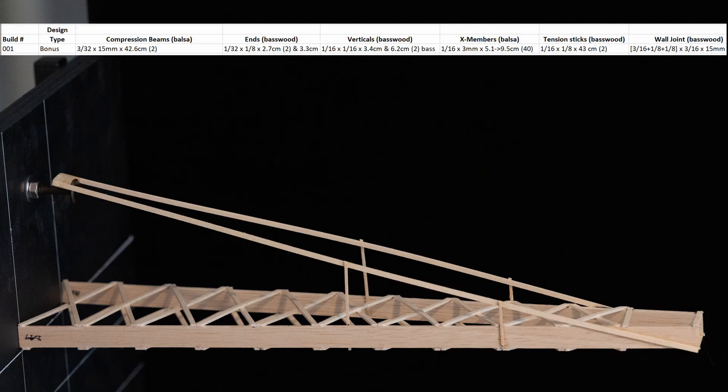Strongly borrowing from what I learned during the previous Boomi cycle, this is the design I started with. For the compression beams, I used three 32nd sheet balsa cut to 15 mm tall with a length of 42.6 cm. The end pieces were 1/32 by 1/8 basswood cut to 2.7 and 3.3 cm. The vertical pieces were 1/16 by 1/16 basswood at 3.4 and 6.2 cm. The cross members were made from 1/16 sheet balsa cut to 3 mm ranging in length from 5.1 cm at the end to 9.5 cm at the wall. Finally, the tension sticks were 1/16 by 1/8 basswood at 43 cm.